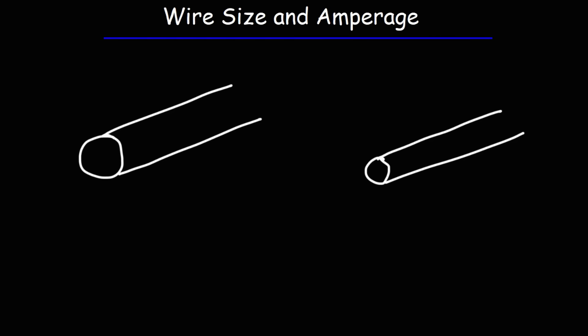In this video, we're going to talk about wire size, wire gauge, amperage, diameter, and other things related to this topic. Perhaps you've seen this abbreviation AWG. This stands for American Wire Gauge, and it tells us the size of the wire and how much current it can safely handle.